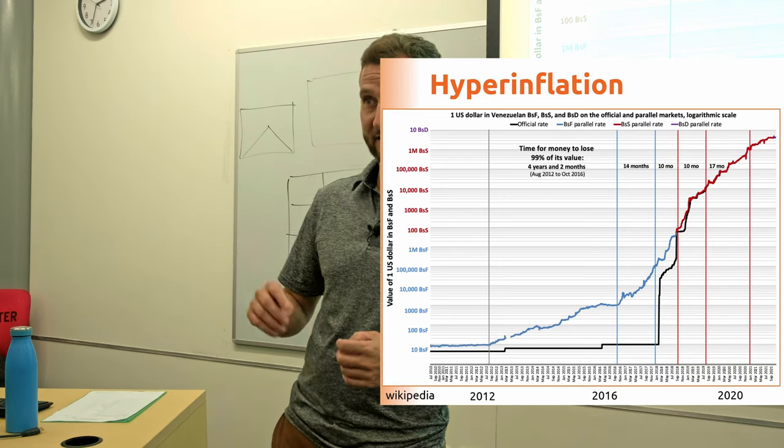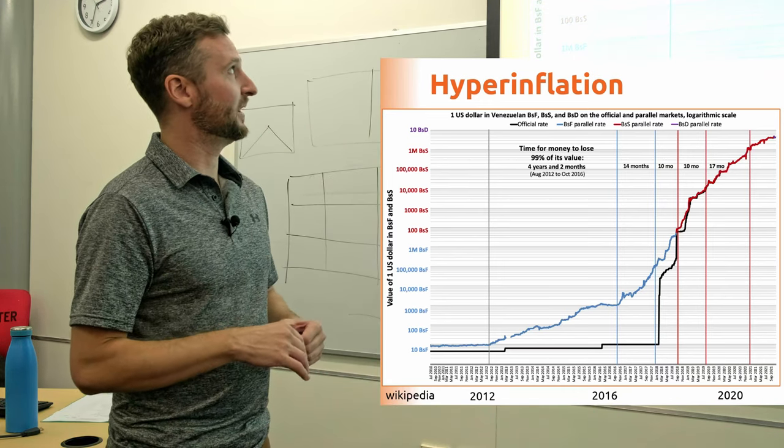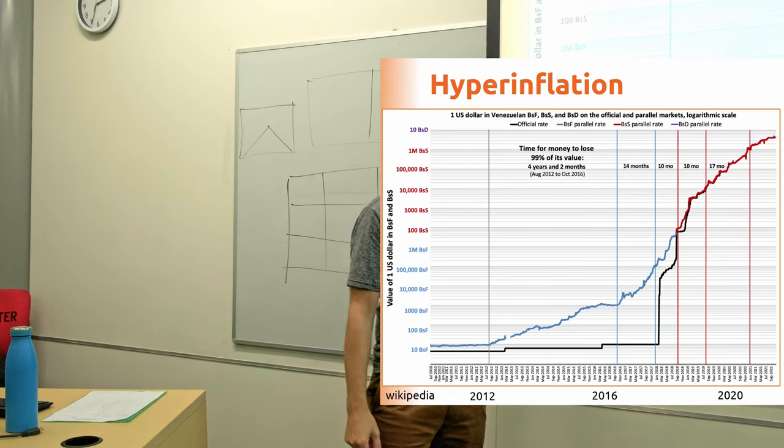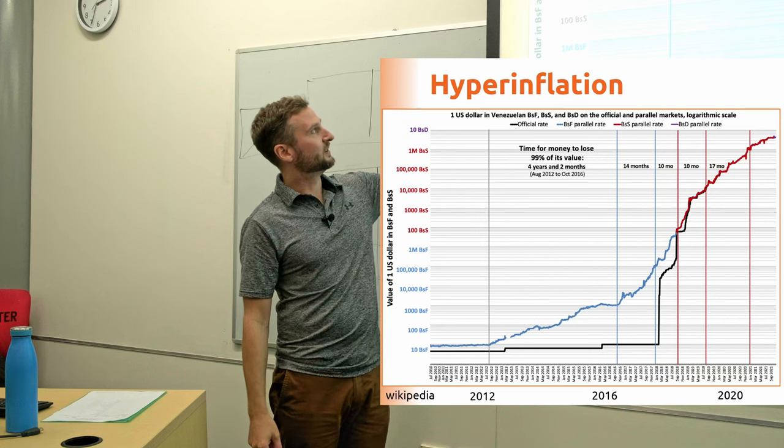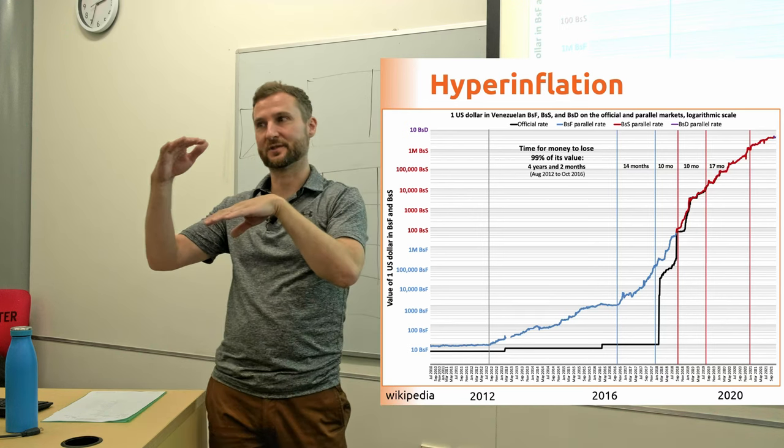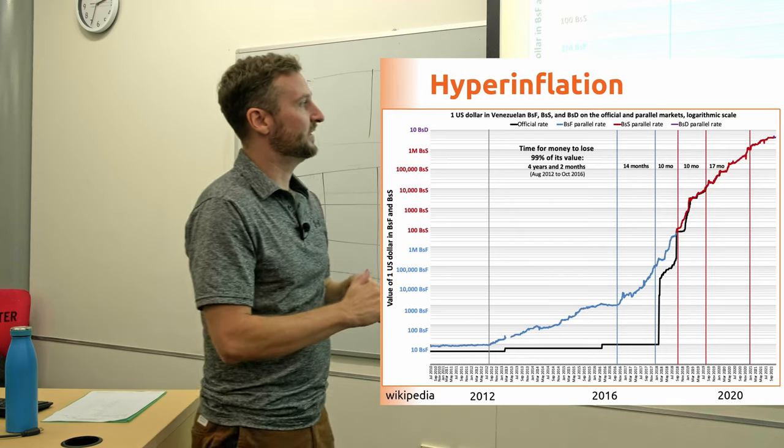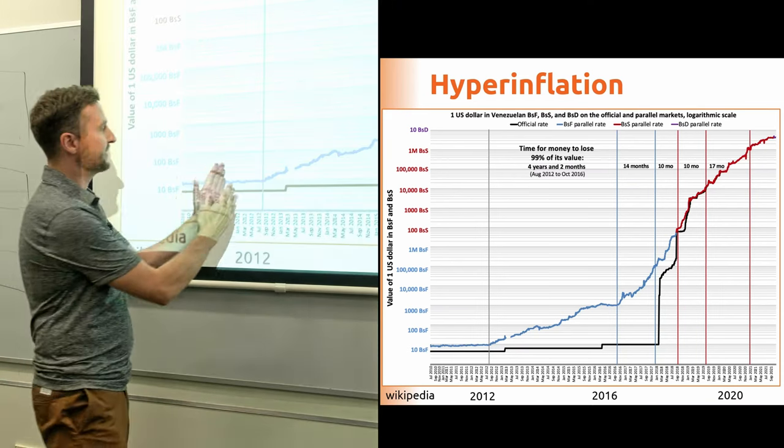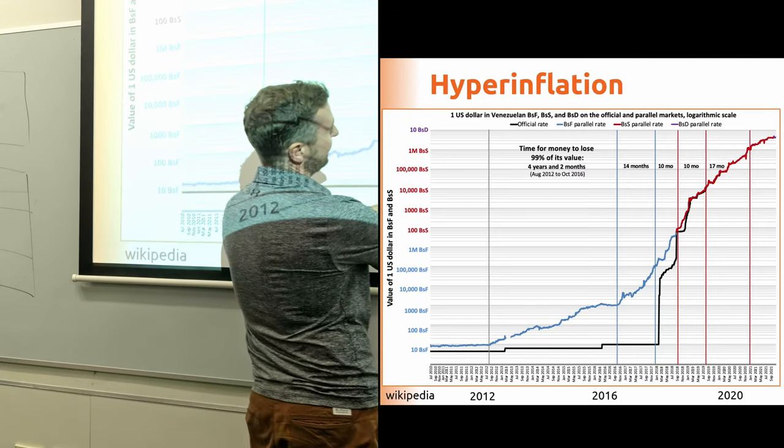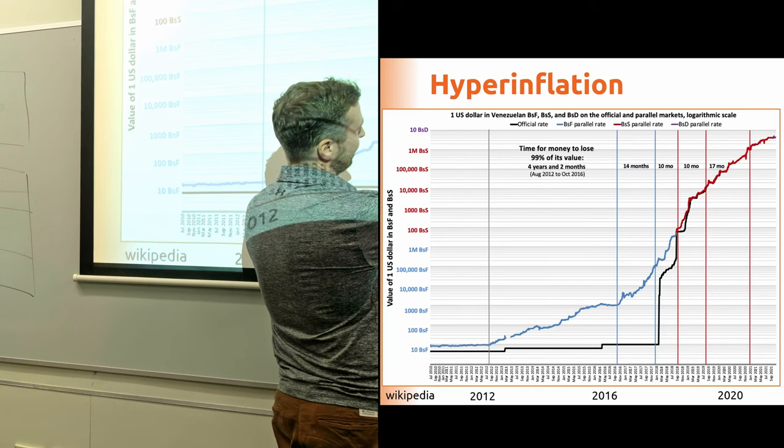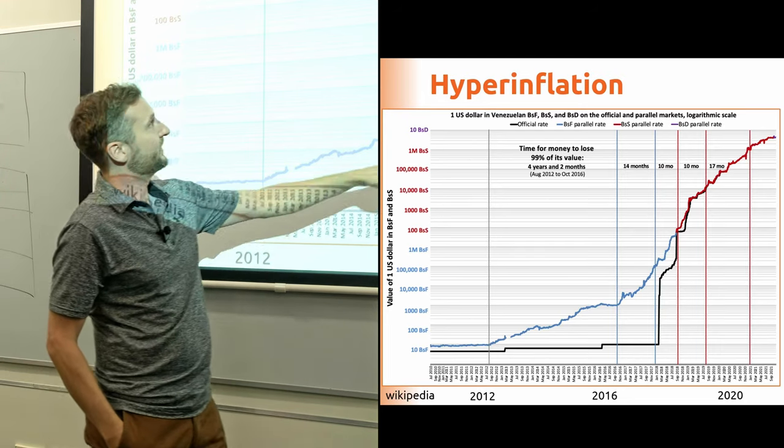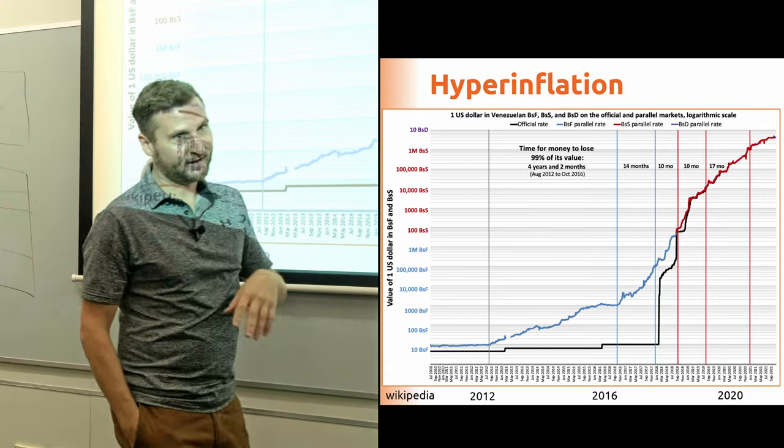So we'll come back to the notes in a second. Here's the graph from Wikipedia of the inflation in Venezuela, or to be more accurate, the hyperinflation in Venezuela. So what we're looking at here is a logarithmic graph. So time is on the x-axis, and that's linear. Value is on the y-axis, and that's logarithmic. So every step is 10 times the difference. And what we see here in the vertical sections is how long it takes for the value to lose 99%. So if you had $1, after this amount of time, it was worth one cent. And then after this amount of time, again, it was worth 0.01 cent.